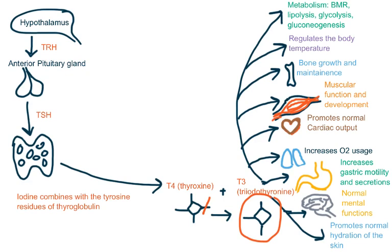In the GIT, thyroid hormones increase gastric motility and its secretions. In the brain, they are also very important to maintain normal mental functions. Finally, thyroid hormones promote the normal hydration of the skin. This is a general overview of the functions, but if you remember these, it is very easy to understand the symptoms of hypothyroidism and hyperthyroidism.